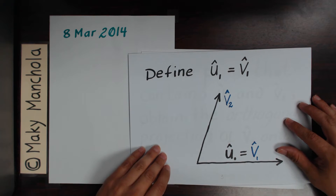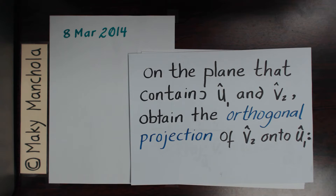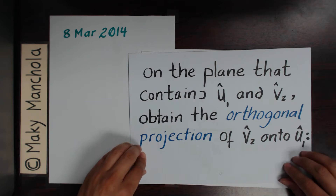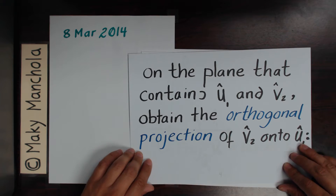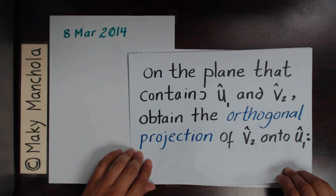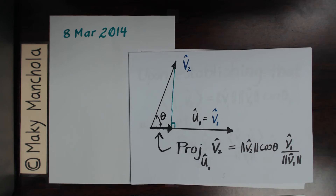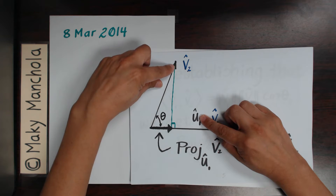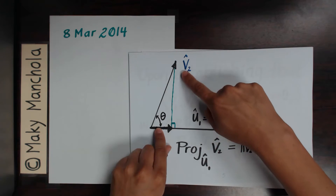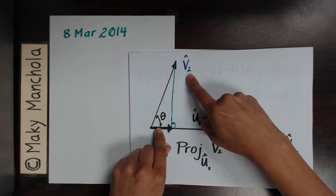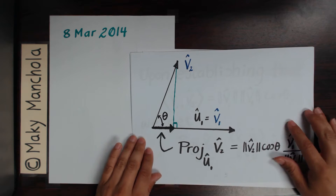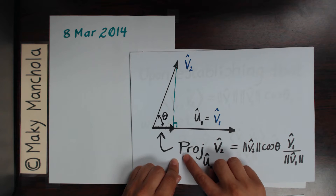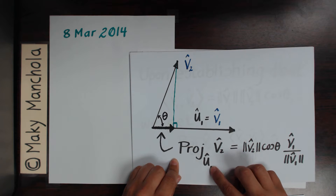On the plane that contains u1 and v2, obtain the orthogonal projection of v2 onto u1. Here you have the plane that contains u1 and v2. We use this notation to mean the orthogonal projection — the projection of v2 onto u1.